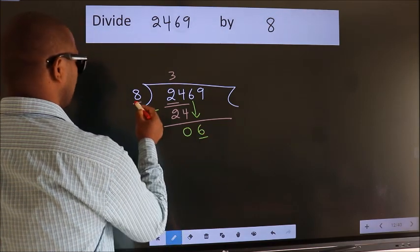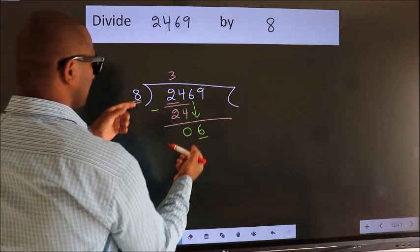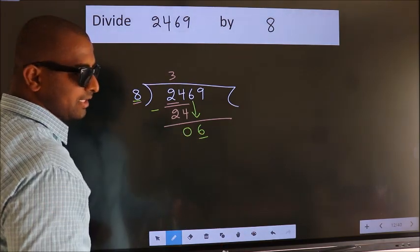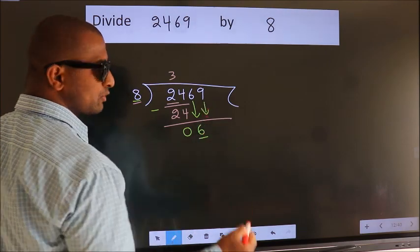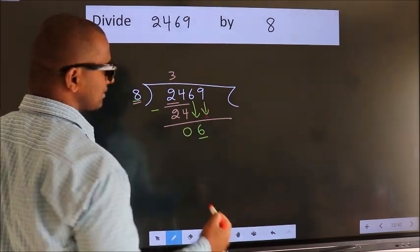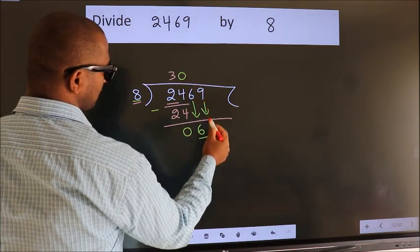Here we have 6. Here 8. 6 is smaller than 8. So, we should bring down the second number. And the rule to bring down second number is put 0 here. Then only we can bring down this number.